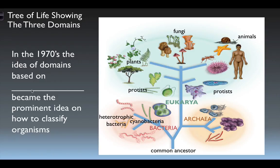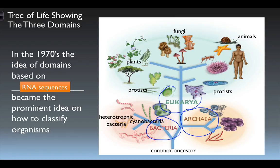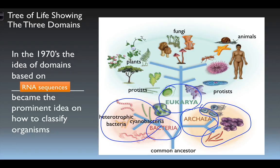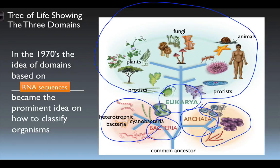This tree of life shows our three domains. After 1969 we started looking at RNA more intently, and similar RNA sequences in certain organisms became the prominent idea for classification, allowing the three-domain system to take precedence. Domain Bacteria includes cyanobacteria and heterotrophic bacteria. Domain Archaea are a type of bacteria living in very extreme, inhospitable environments — but life always seems to find a way. Domain Eukarya consists of all the other organisms. The five kingdoms are no longer considered relevant; instead Plantae, Fungi, and Animalia inhabit Eukarya along with what used to be called Protista.